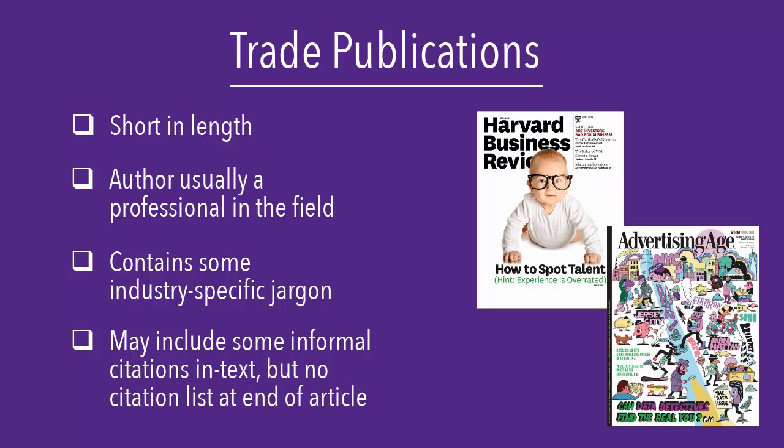You may see informal citations throughout the text, but there won't be any formal list of citations at the end of the article. Examples of trade publications are Harvard Business Review and Advertising Age. These sources are not scholarly, but they may be appropriate for your research depending on the requirements your professor has outlined. Trade publications are great sources to use for something like a marketing or business plan.